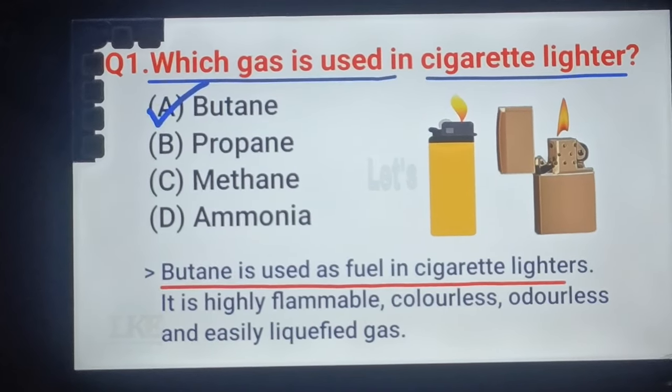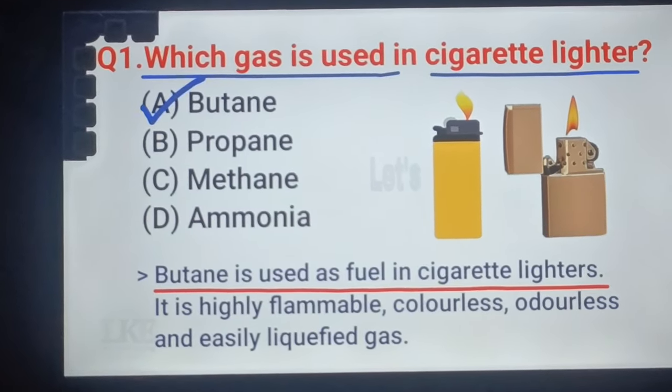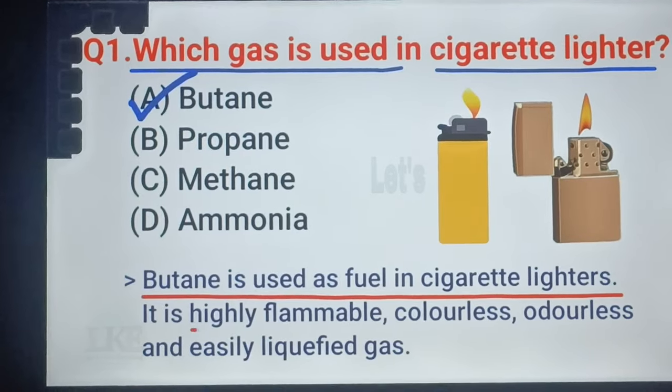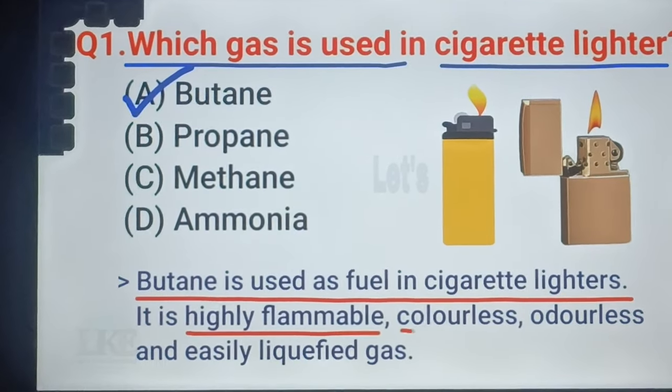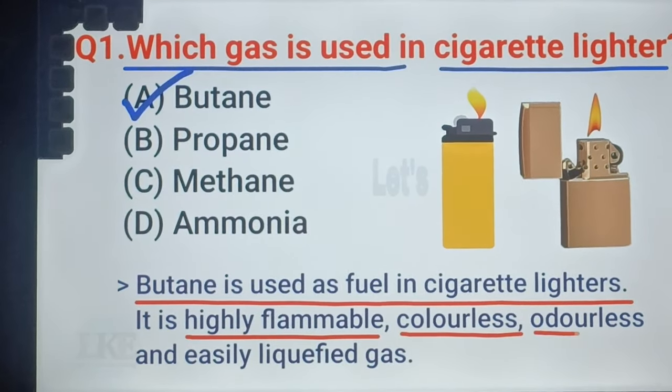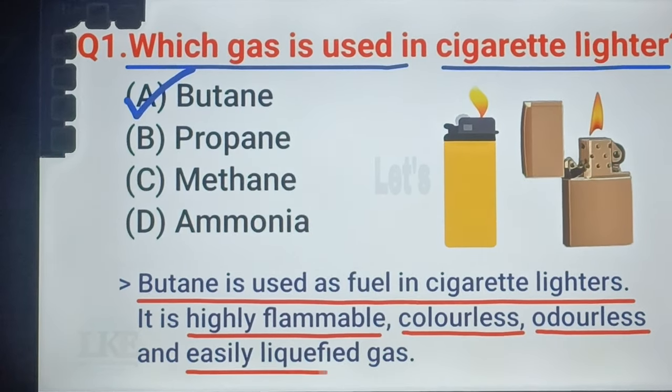Butane is used as fuel in cigarette lighters. It is highly flammable, colorless, odorless, and easily liquefied gas.